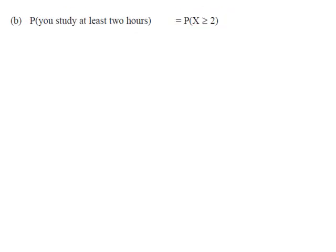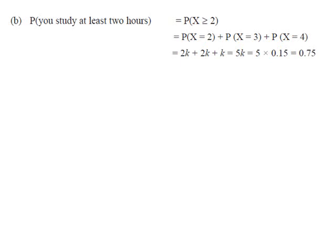In part b, first we find the probability that you study at least 2 hours. This equals P(X ≥ 2). Studying at least 2 hours means you can study for 2, 3, or 4 hours. So P(X ≥ 2) = P(x=2) + P(x=3) + P(x=4) = 2k + 2k + k = 5k. Putting the value of k, the probability that you study at least 2 hours is 0.75.